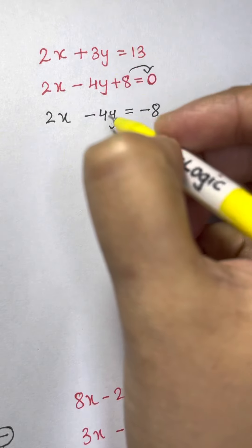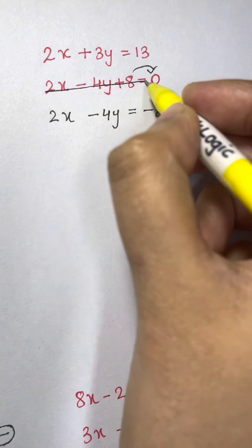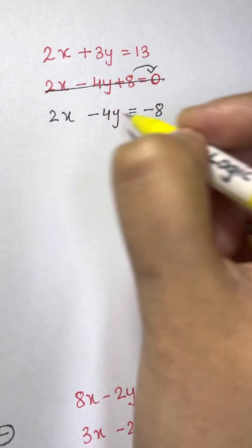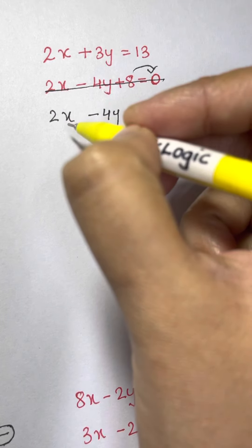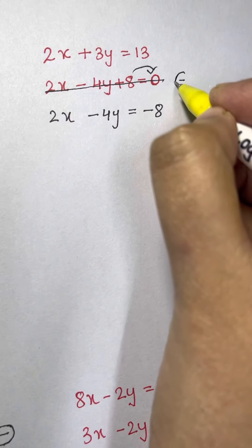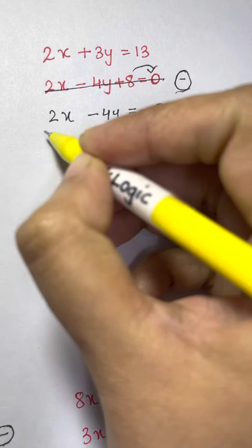Now the two equations look similar. So let's strike off this one. Now we have this equation and this equation similar to each other. What are we going to do? To eliminate, we can eliminate 2x by subtracting the equations. Yes, so let's subtract.